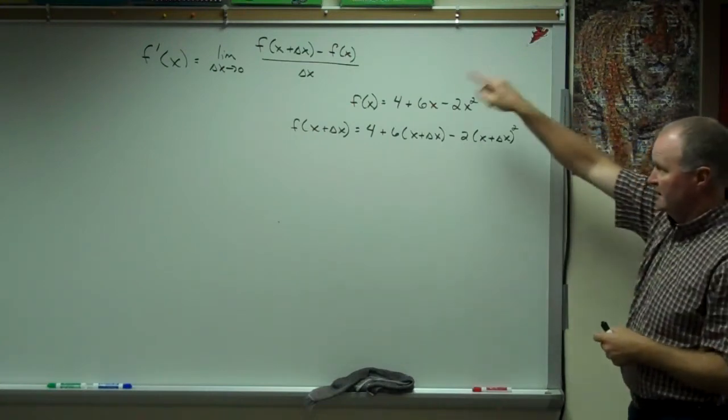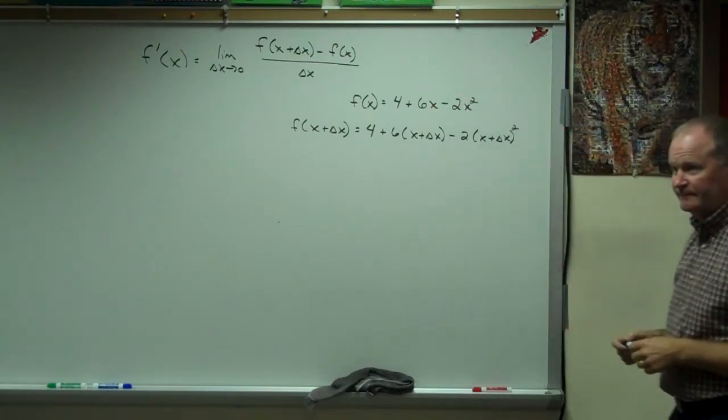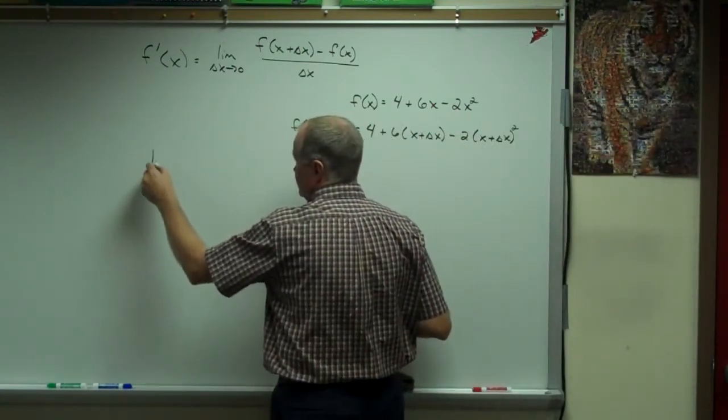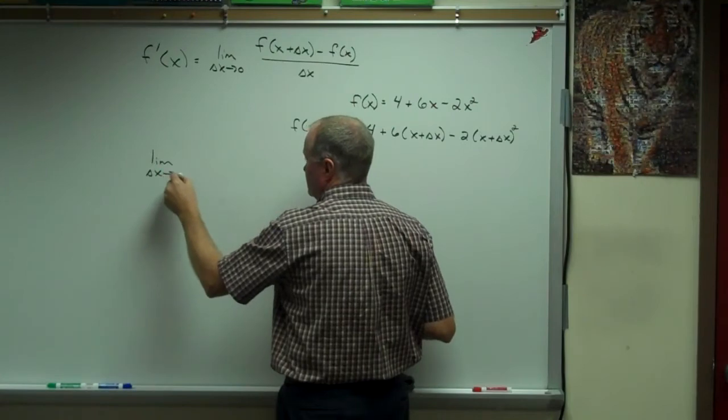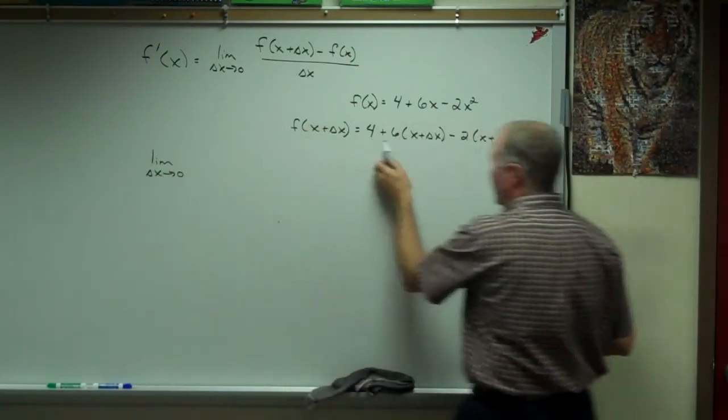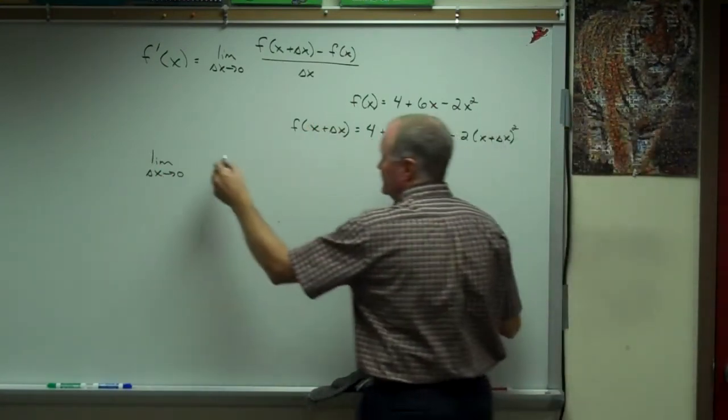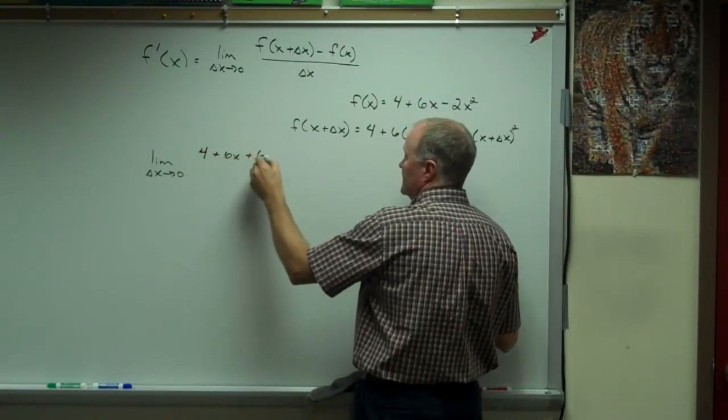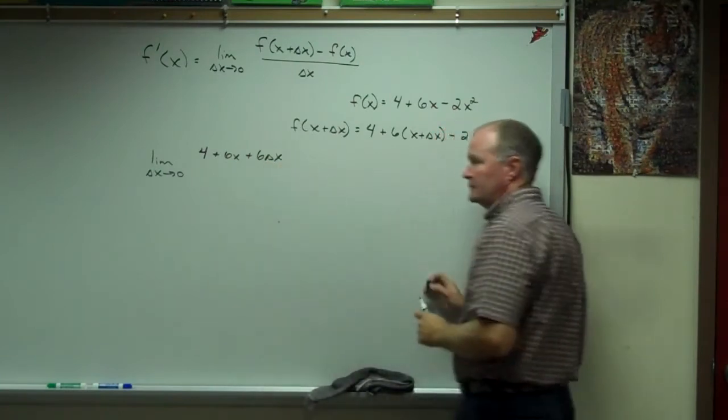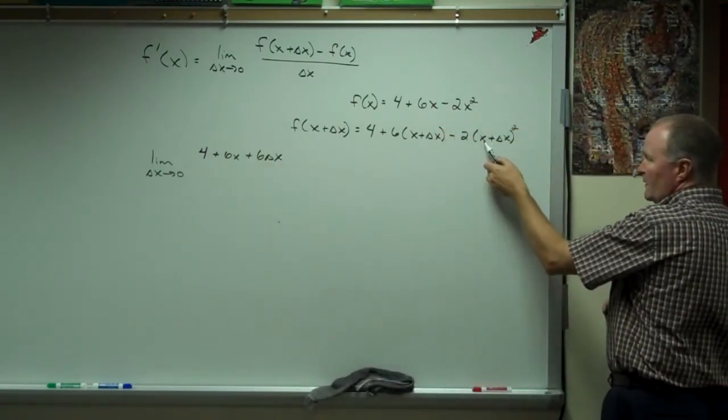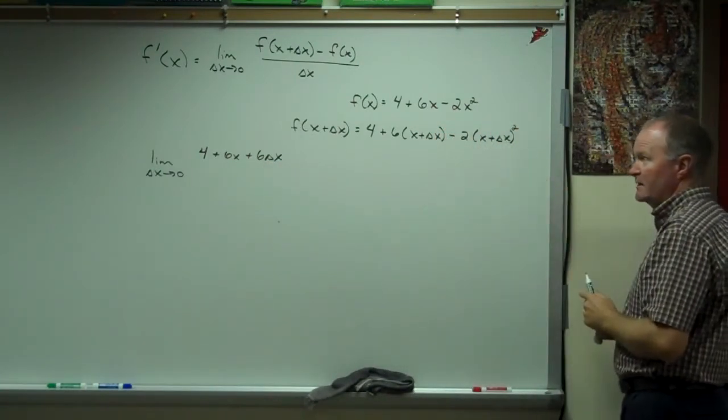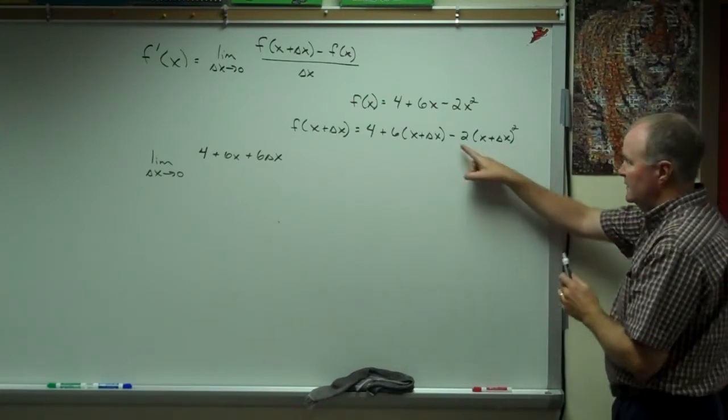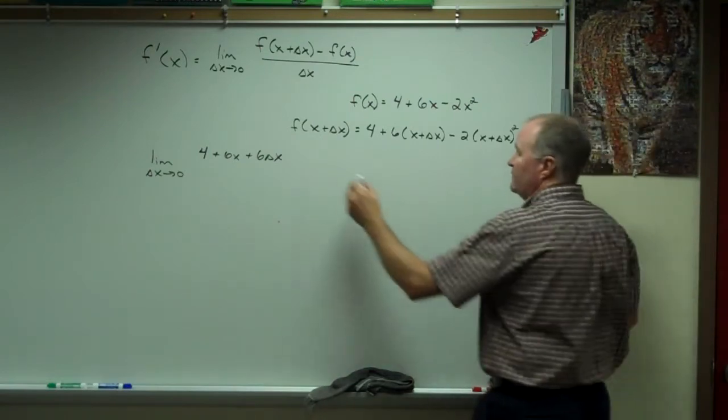Now I've got to plug these two things into the formula up above. I'm going to go ahead and multiply this stuff all out. So I have 4, 6x, and a 6 delta x. When I square x squared plus 2x delta x plus delta x squared, I'm going to multiply them by negative 2.